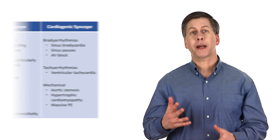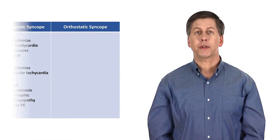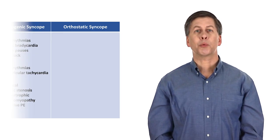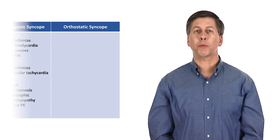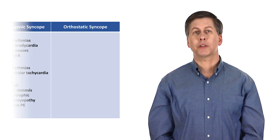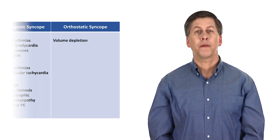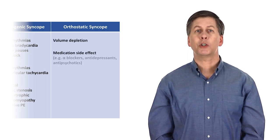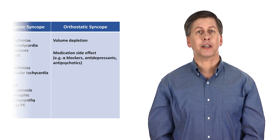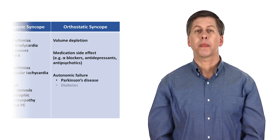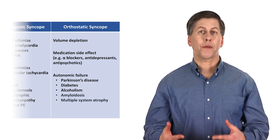The last major mechanism in our framework is orthostatic hypotension. This is the situation in which a patient's blood pressure drops precipitously upon standing. It is arbitrarily defined as the presence of either a systolic drop of 20 mmHg or a diastolic drop of 10 mmHg when moving from the lying to standing position. Orthostatic hypotension can be subdivided into volume depletion from any cause, medication side effects in which alpha blockers, antidepressants and antipsychotics are the most commonly implicated, and autonomic failure, as seen with Parkinson's disease, diabetes, and alcoholism, along with many other conditions.